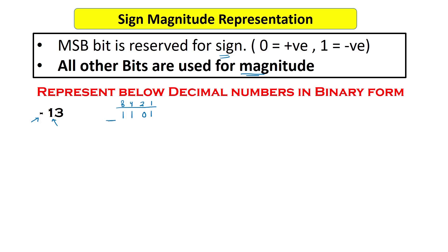The most significant bit (MSB) is reserved for the sign. Since 13 is negative, we put 1 at the MSB to represent that this is a negative number. If the number were positive, we would put 0 at the MSB. So the 1 tells us the number is negative, and the remaining bits 1101 represent the magnitude.